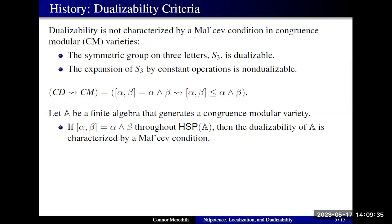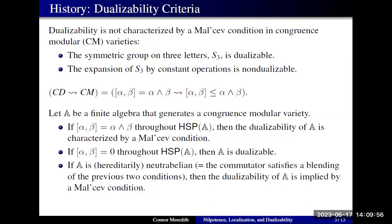On the other extreme, instead of the commutator being as large as possible, we can also look at when the commutator is as small as possible. When we're dealing with abelian algebras, it turns out that any abelian algebra is dualizable. There are things in between: there's a property called neutral abelianness — some type of blending between neutral commutator behavior and abelian commutator behavior — and it turns out that in that setting, dualizability is at least implied by a Maltsev condition.